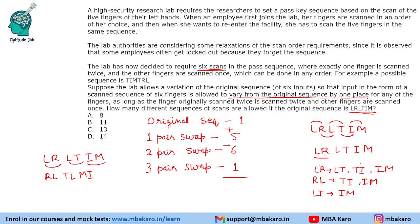Counting the total number of ways: 1 original plus 5 single adjacent swaps plus 6 two-pair swaps plus 1 three-pair swap gives 13 possible sequences in which one can enter the lab. This was the solution to the set and the answers to all four questions.